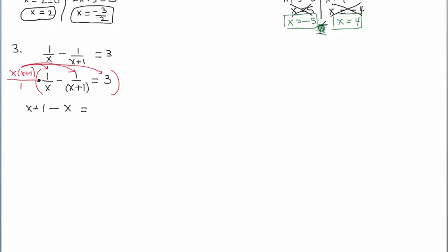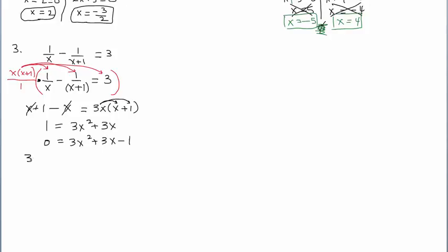Then I multiply 3 times the LCD x(x+1), putting the 3 up front. On the left side, the terms cancel and I'm left with 1. On the right side I distribute to get 3x squared plus 3x. It's quadratic, so now I think about techniques for solving quadratic equations. I'm going to zero out the left side, trade sides, giving 3x squared plus 3x minus 1 equals 0.